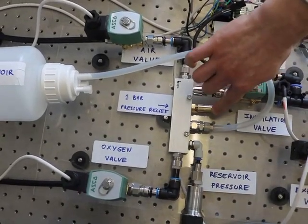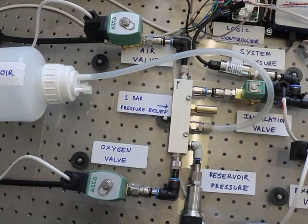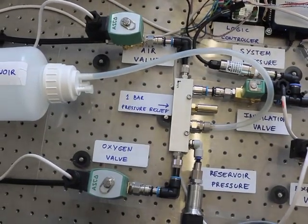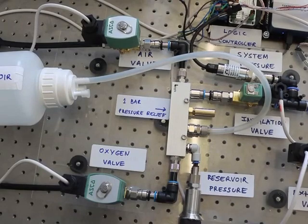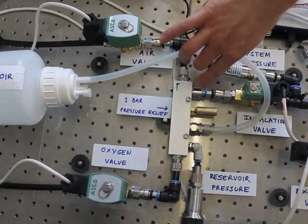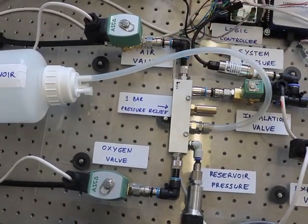And we have a safety feature here, which is a pressure relief valve. If the pressure in the reservoir exceeds one bar, that lets gas out, so that it will never exceed that value. And then here we have a connection to the inhalation pathway.